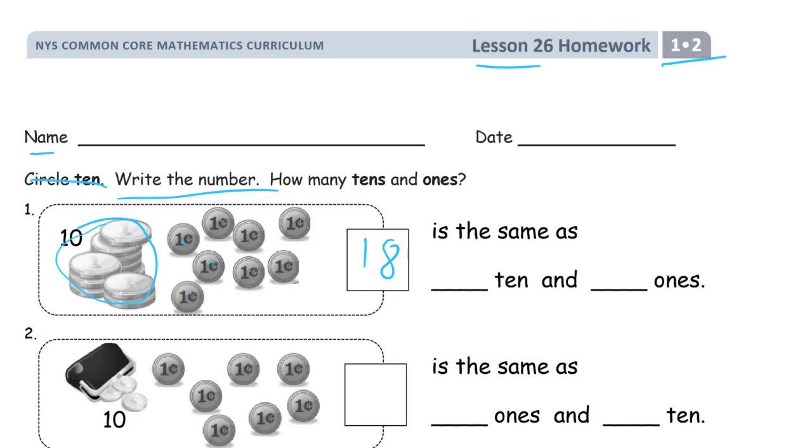18 is the same as one group of 10, 1, 10, and 8 ones.